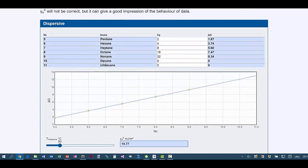So let's say that the Vg for pentane was 2, for hexane was 4, for heptane was 8, and so forth. The delta G's are calculated from the formula. And then you have this plot of delta G versus the number of carbons. And from the slope and from the temperature, you work out that it is 19.7 millijoules per meter squared surface energy.